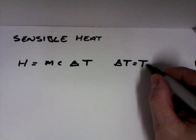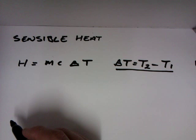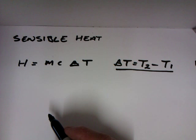H is the quantity of sensible heat. M is the mass of the substance in kilograms and C is the specific heat capacity of that substance.